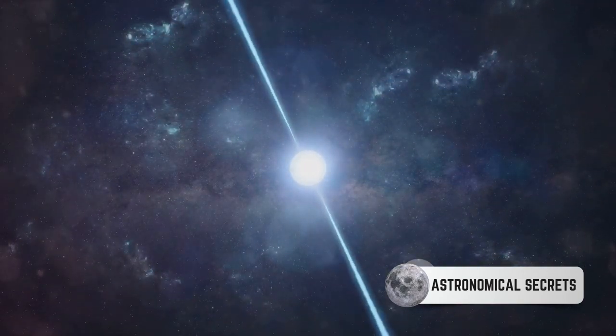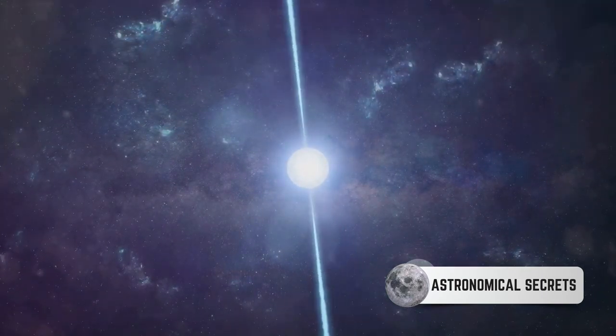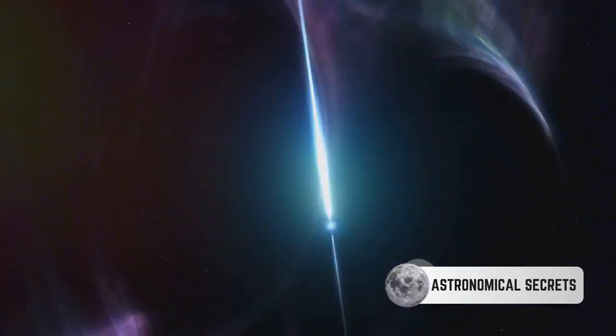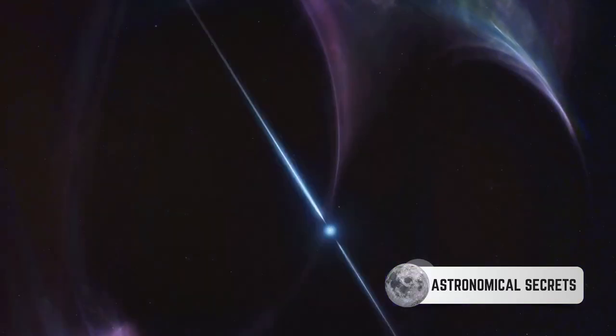These celestial bodies are not your average stars. Born from the explosive death throes of massive stars, neutron stars are the densest objects in the cosmos, save for black holes. They're so dense that a teaspoon of neutron star matter would weigh about a billion tons on Earth.